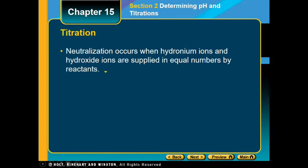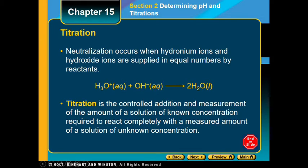Titrations involve neutralization occurring when hydronium ions and hydroxide ions are supplied in equal numbers by reactants. Hydronium plus hydroxide gives water — a balanced equation. This is a controlled addition and measurement of a solution of known concentration required to react completely with a measured amount of a solution of unknown concentration.